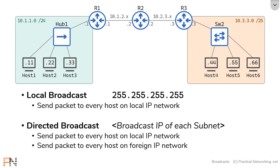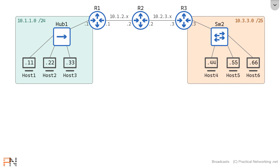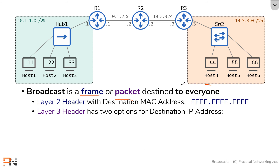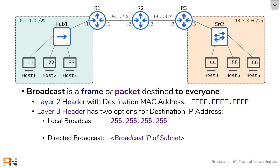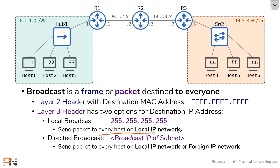That proves the behavior of both the local broadcast and the directed broadcast. To recap: a broadcast is a frame or packet destined to everybody on the local network. At layer 2, that frame will have a destination MAC address of all Fs. At layer 3, you have two options: the local broadcast IP address, which is always 255.255.255.255, or the directed broadcast IP address, which is the broadcast IP address of each subnet. The local broadcast can speak to everybody on the local network, while the directed broadcast can speak to everybody on the local network or a foreign network.